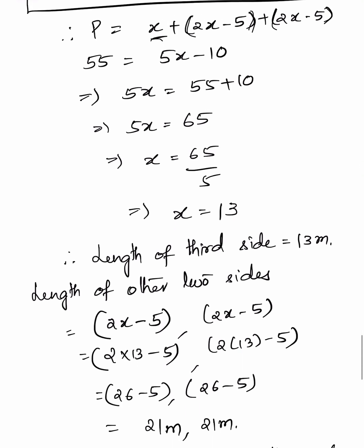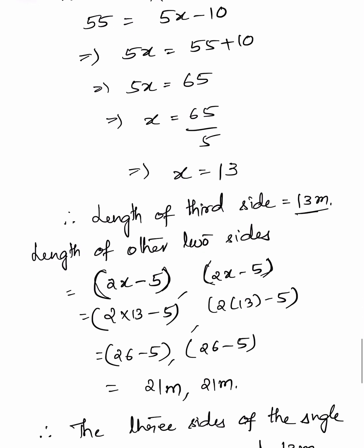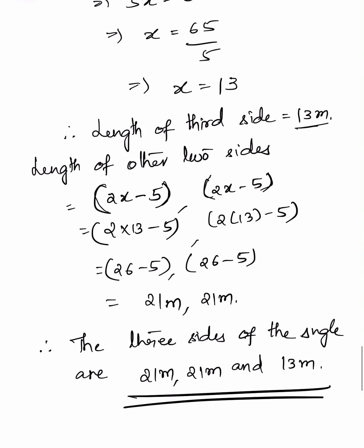Therefore, the length of the third side is 13 meters. The other two sides are 2x minus 5 each — that is, 2 times 13 minus 5 equals 26 minus 5 equals 21 meters. Therefore, the three sides of the triangle are 21 meters, 21 meters, and 13 meters.